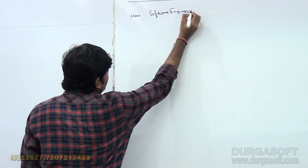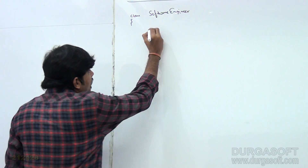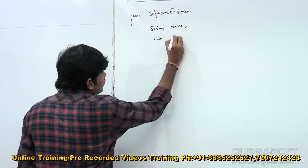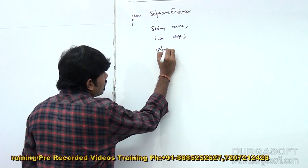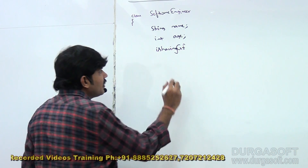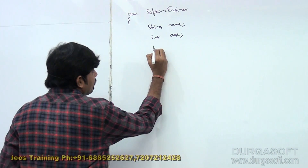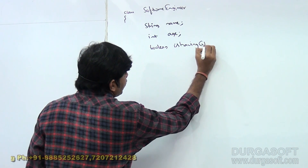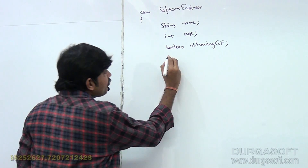Let me write the SoftwareEngineer class. Observe very carefully. Every software engineer will have three properties: first is 'name', second is 'age' (required for this requirement), and third is 'isHavingGirlfriend', which is of boolean type — true or false.